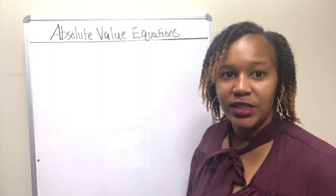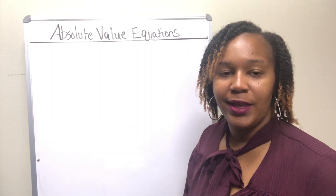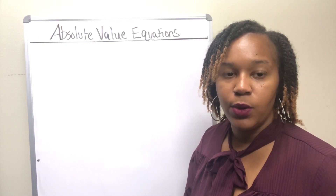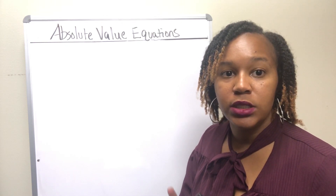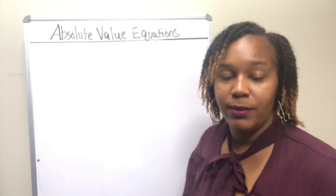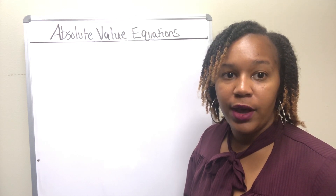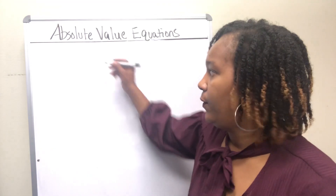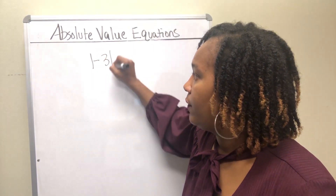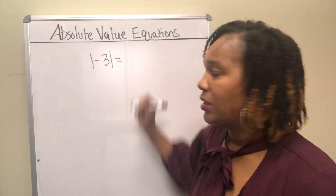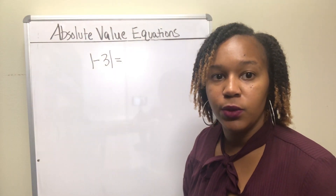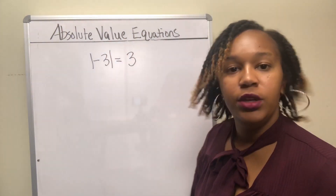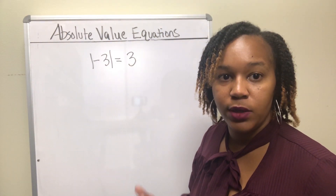An absolute value equation is an equation that has absolute value bars in it. In order to solve absolute value equations, you first need to understand what the absolute value is. The absolute value measures the distance of a number from 0. The absolute value of negative 3 is basically saying how far is negative 3 from 0. Negative 3 is 3 units from 0, so the absolute value of negative 3 is 3.